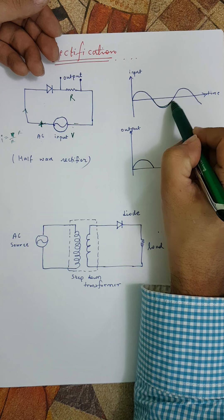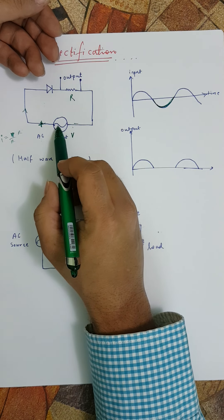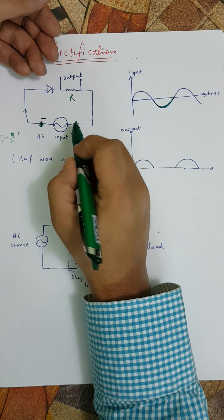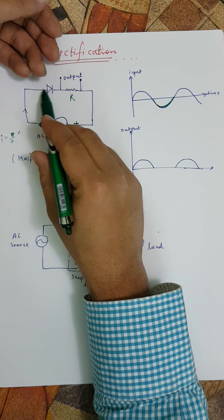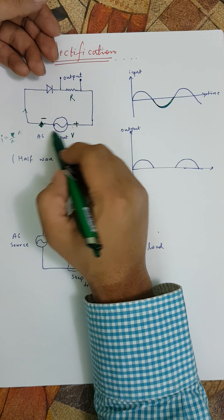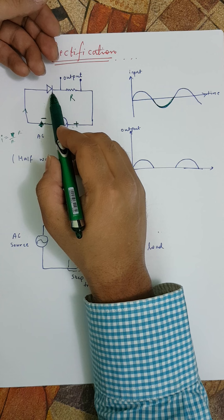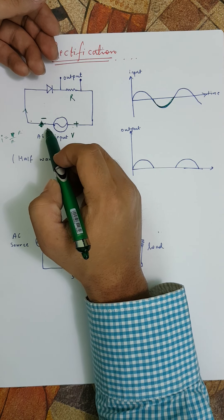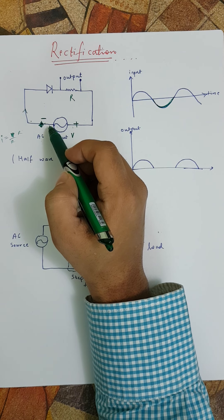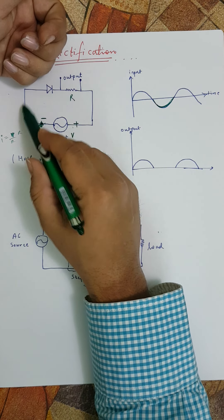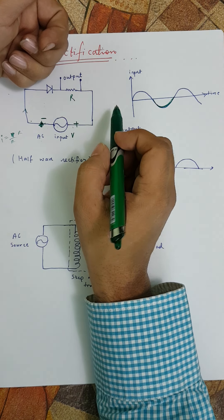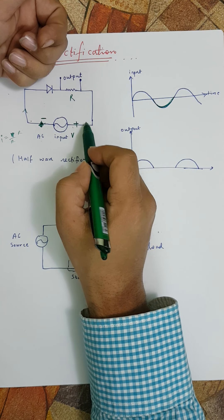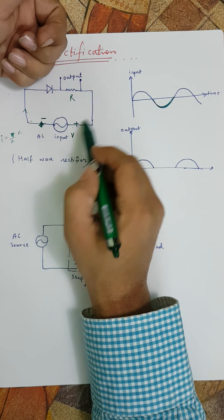What about when in the negative half cycle, when the voltage becomes negative? This becomes negatively charged and this becomes positively charged, so it's behaving like a battery which wants to flow the current in reverse — which is a reverse path for the diode. An ideal diode doesn't allow any current to flow, and even a non-ideal one will allow only micro-ampere current, which is not very significant.